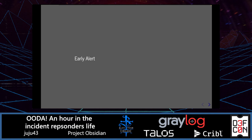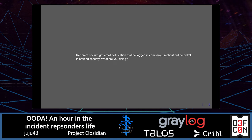Let's move to an early alert. As part of Project Obsidian, the team has simulated different scenarios and kill chains. During an early level of this attack, we received a notification: user Brent Sorsium got an email notification that he logged into the company jump post — but he didn't. Being a very good company member, he notified security. You are security. What do you do?